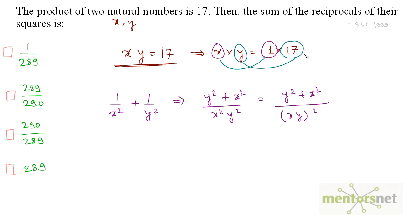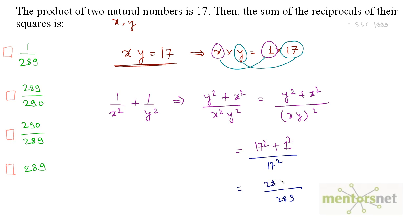We know the value of x and y. This equals y squared, which is 17 squared, plus x squared, which is 1 squared, divided by xy which is 17, so we have 17 squared on the denominator. 17 squared equals 289, so the numerator is 289 plus 1 equals 290, divided by 289. The answer is 290 by 289.